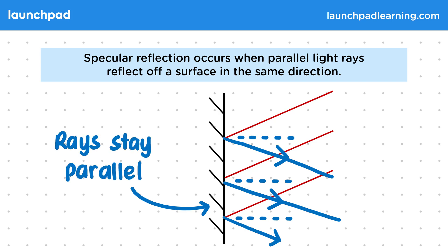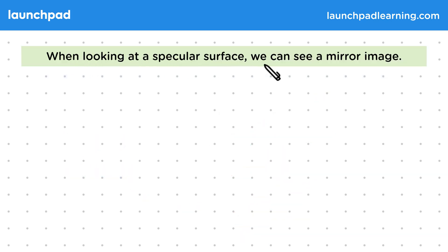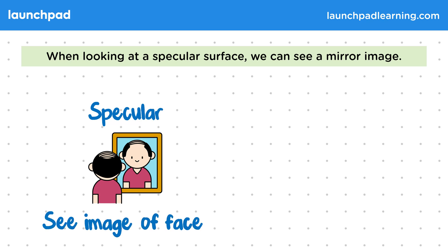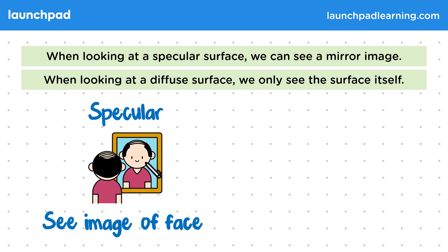So what happens when we look at a surface? Does it matter whether the surface is diffuse or specular? When looking at a specular surface, we can see a mirror image. So when we look into a mirror — an example of a specular surface — we will see an image of our face. Because of how the rays reflect, we believe that they originate from a point beyond the mirror. So we see an image of our face because the reflected rays have made us think that this is where our face is.